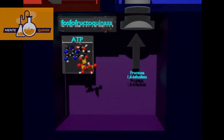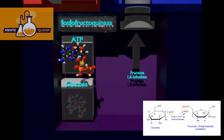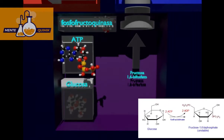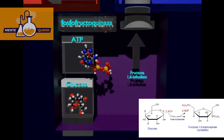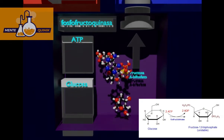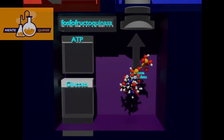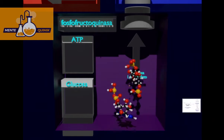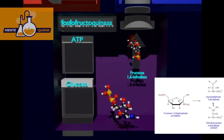Glucose is reduced with adenosine phosphate and reacts with the enzyme phosphofructokinase to synthesize an unstable molecule called fructose 1,6-bisphosphate. This breaks down to form two molecules in equilibrium: glyceraldehyde-3-phosphate and dihydroxyacetone phosphate.